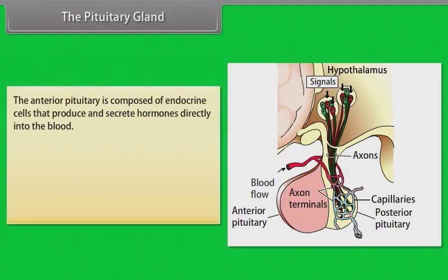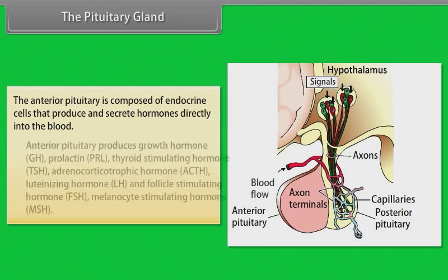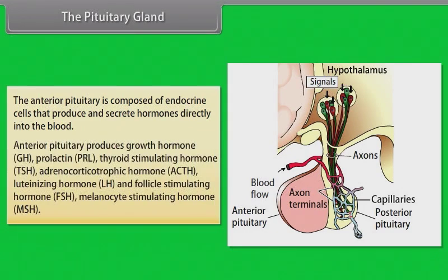The anterior pituitary is composed of endocrine cells that produce and secrete hormones directly into the blood. Anterior pituitary produces growth hormone (GH), prolactin (PRL), thyroid stimulating hormone (TSH), adrenocorticotrophic hormone (ACTH), luteinizing hormone (LH), follicle stimulating hormone (FSH), and melanocyte stimulating hormone (MSH).